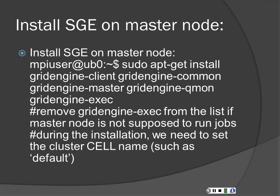We know Sun got bought by Oracle, but it's still called the Sun Oracle Grid Engine. Basically what you want to do is sudo apt-get install, and you have a number of different chunks: the Grid Engine Client, the Grid Engine Common — which is all the common packages you'll need — the Grid Engine Queue Monitor, and the Executive. If it's not a master node, then remove Grid Engine Exec for all your slaves.